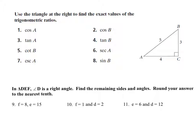Use the triangle at right to find exact values using SOHCAHTOA and the reciprocal functions. Cosine of A is adjacent over hypotenuse, so this is four fifths. Cosine of B is adjacent over hypotenuse to B, which is three fifths. Tangent of A is opposite over adjacent, which is three fourths. Tangent of B is opposite over adjacent, which is four thirds.